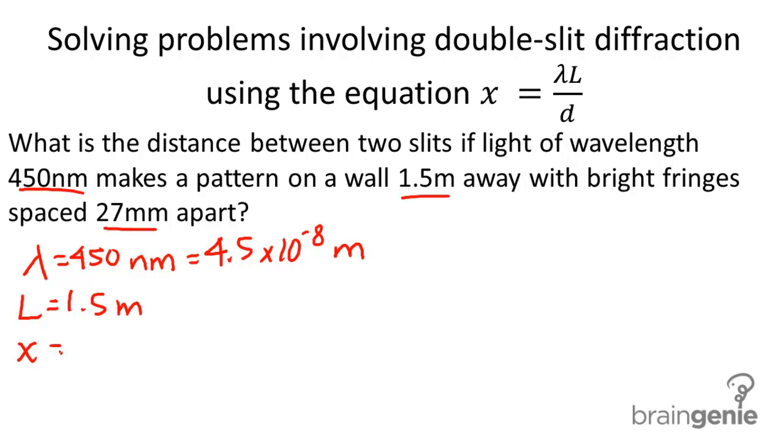And then finally, we have the distance between the fringes, x, of 27 millimeters. And when we convert that to meters, we get 2.7 times 10 to the negative sixth meters.